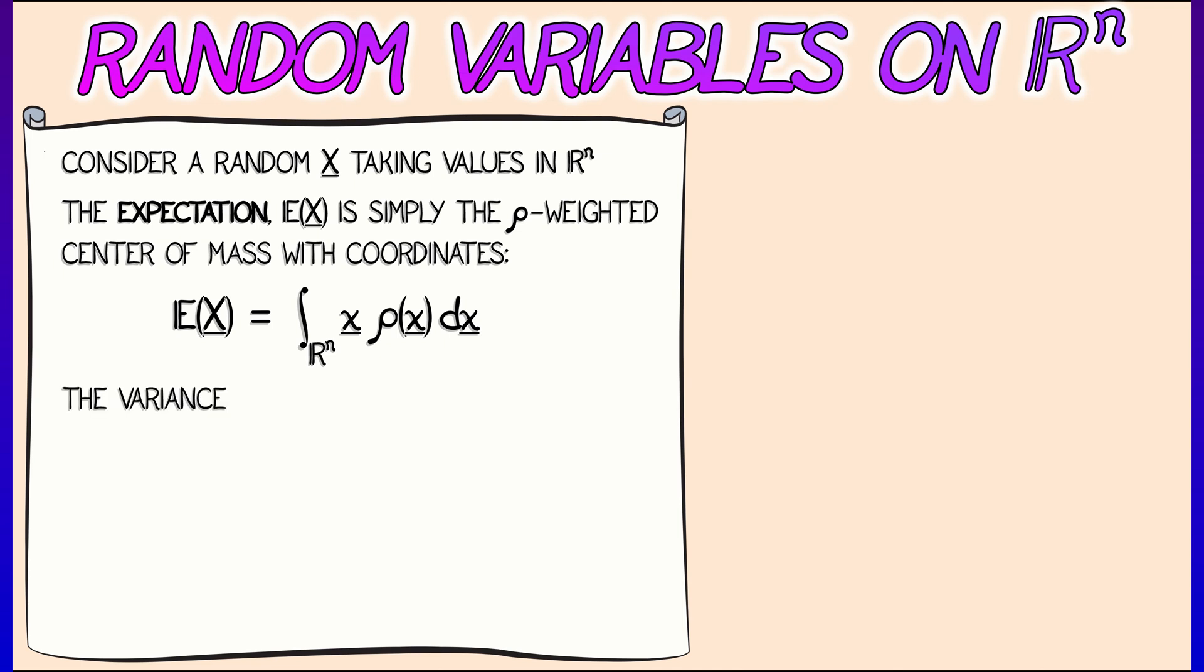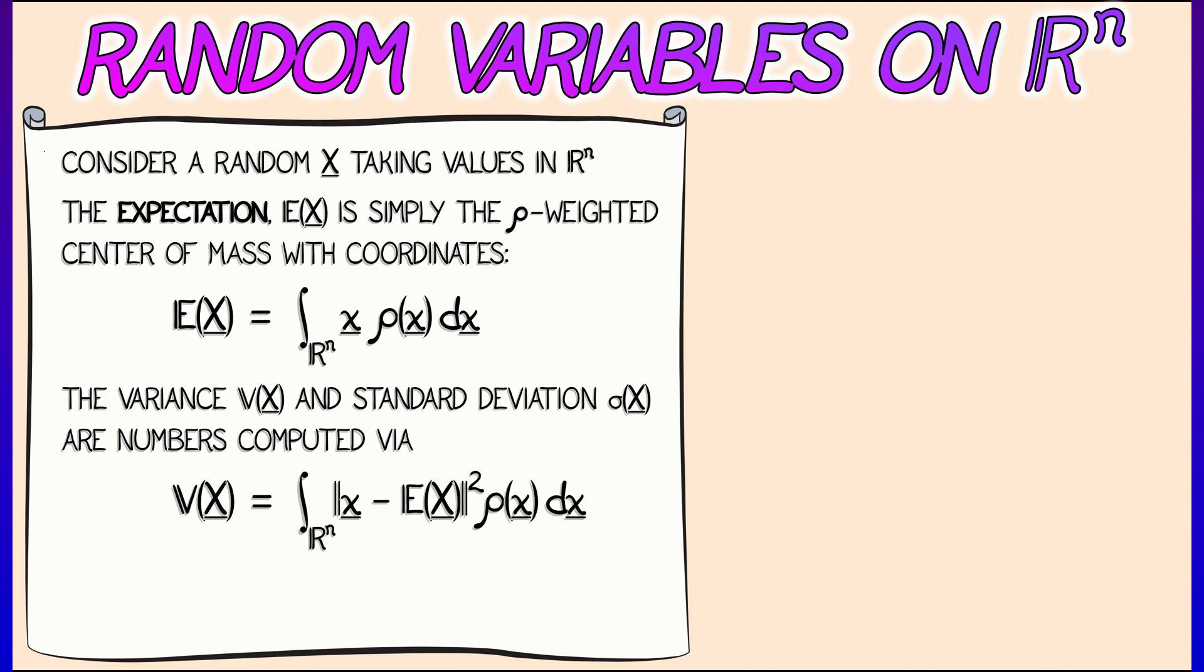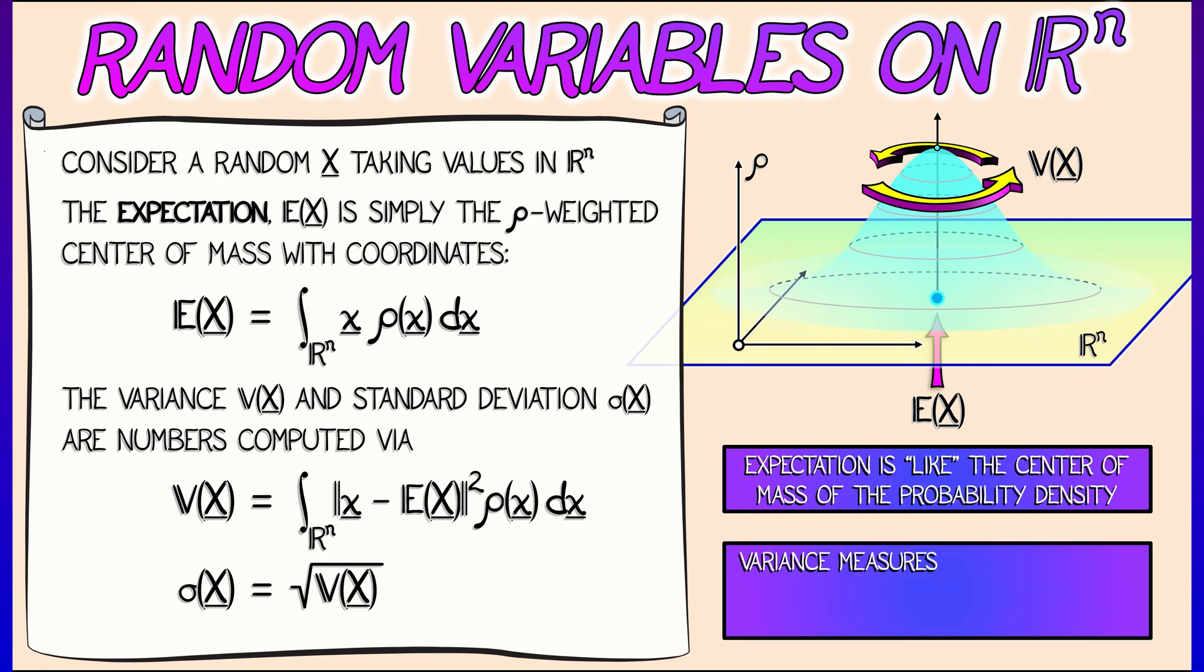The variance, however, is computed by exactly the same formula that we're used to. V(X) is the integral of the distance squared to the expectation with respect to probability mass times rho of x dx. And the standard deviation, as before, is the square root of the variance.